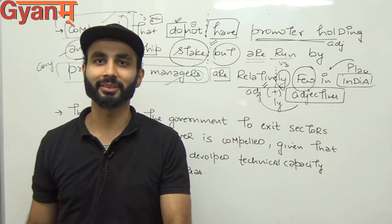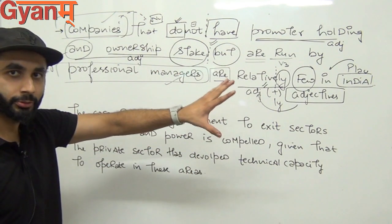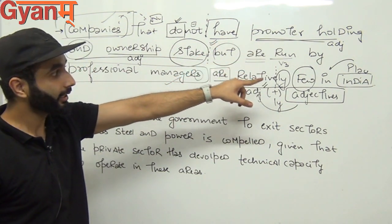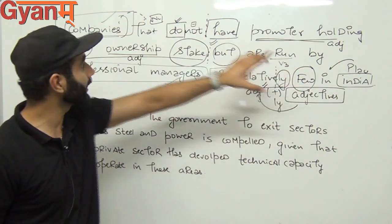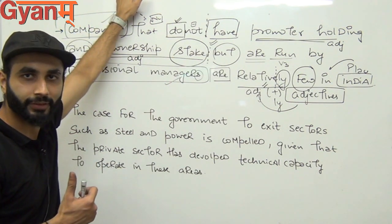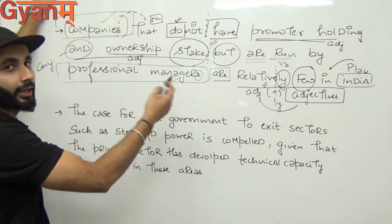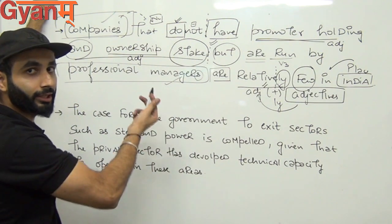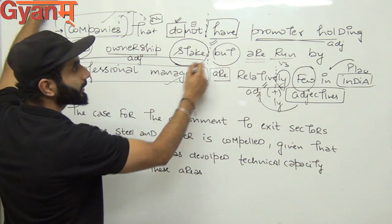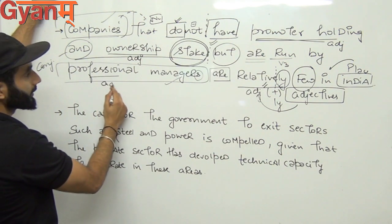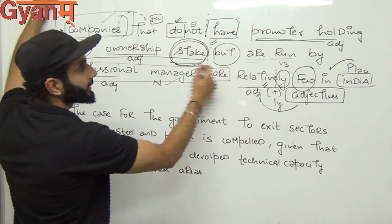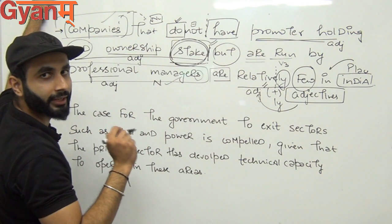After all that analysis — 'no error'? Don't do that. Look carefully. You checked conjunction, tense, passive/active voice, adjective, adverb, preposition — everything. Little did you know there is one small, sweet error: the article. Companies is plural — 'a' and 'the' don't apply directly. Professional managers — plural, so no article issue there. But wait, 'stake' is a noun — it is singular. Its adjectives are 'ownership' and 'promoter holding.' Since there is one stake — one — you need to add an article.